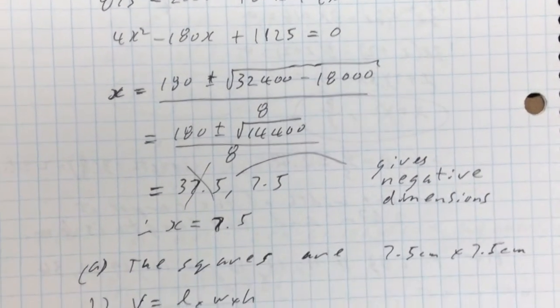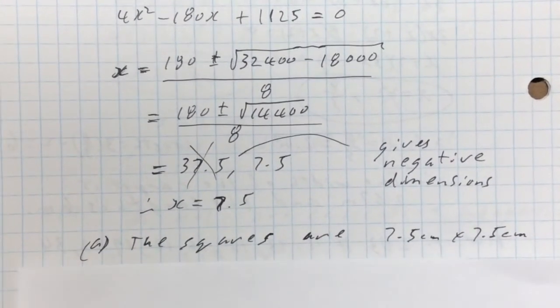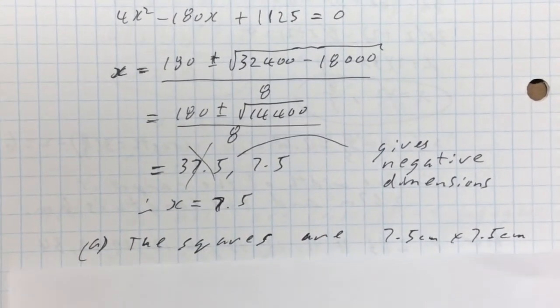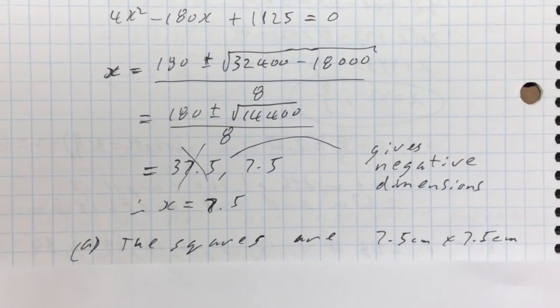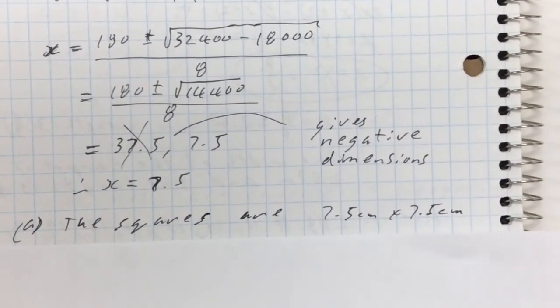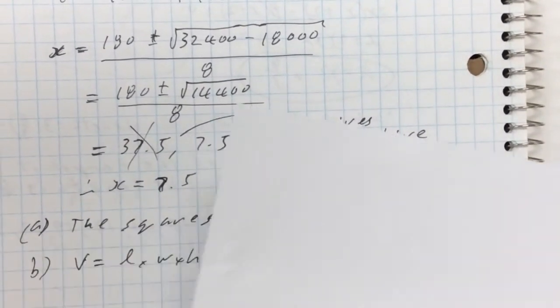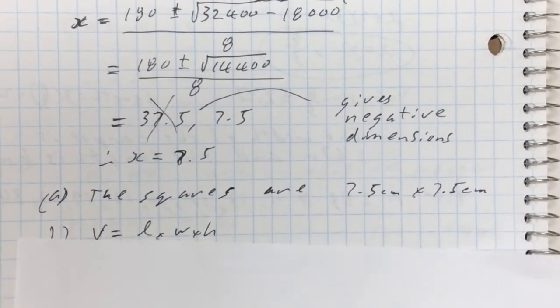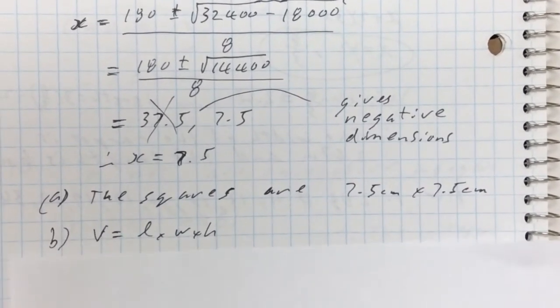So the removed squares are 7.5 cm by 7.5 cm. Part B asks for the volume of the box, which is length times width times height. Once you have X = 7.5, you can calculate the length, width, and height to find the volume.